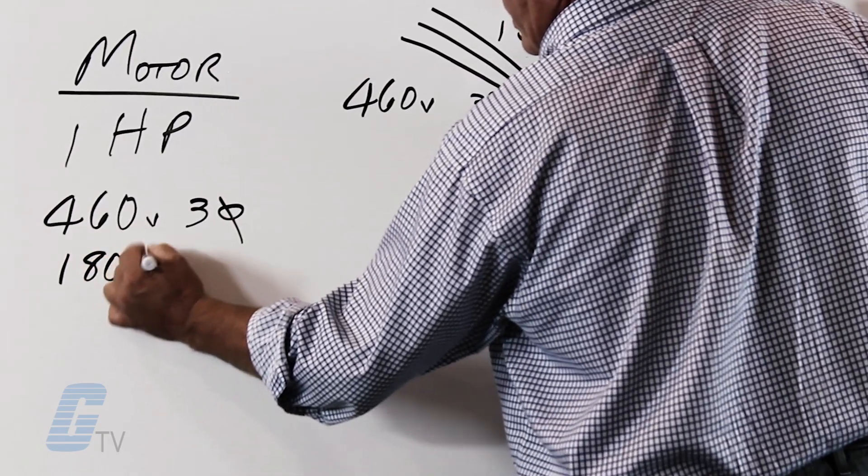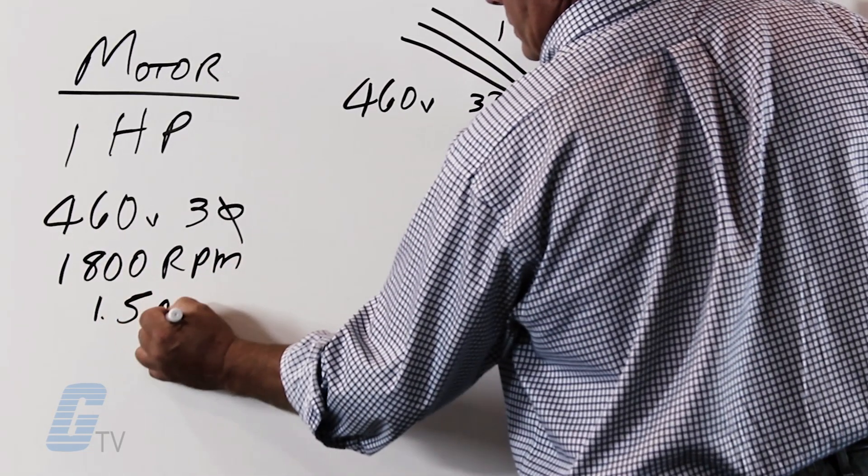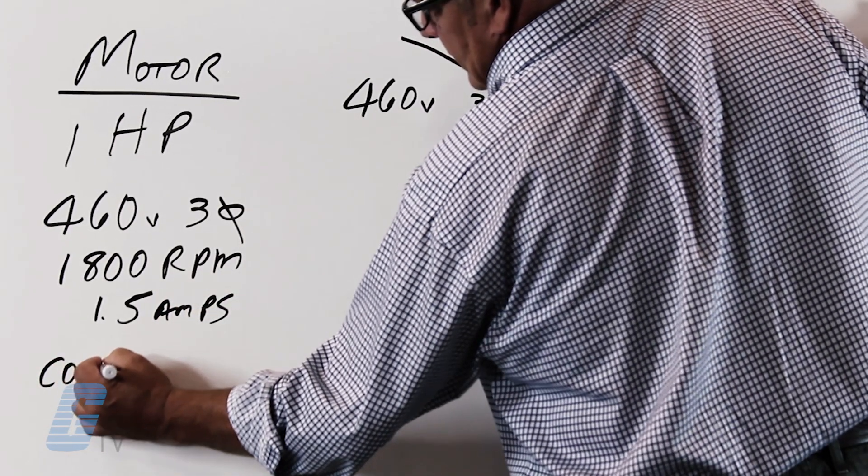1800 RPM, 1.5 amps, and it's a constant torque application.